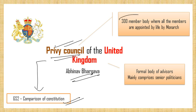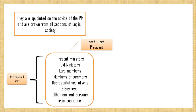The Privy Council is a 300-member body where all the members are appointed for life by the monarch. It is a formal body of advisors mainly comprised of senior politicians. They are appointed on the advice of the Prime Minister and are drawn from all sections of English society.